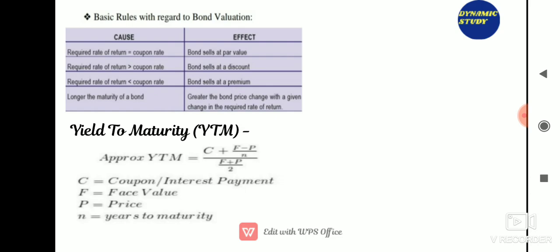Yield to maturity: the yield to maturity formula is used to calculate the yield on a bond based on its current price on the market. Yield to maturity is based on compounding as opposed to simple yield. The formula is: YTM = [C + (Face Value − Price) / N] / [(Face Value + Price) / 2], where C is the coupon payment and N is the years to maturity.